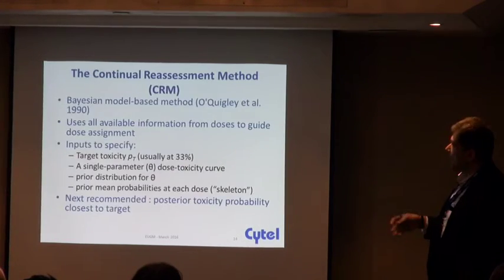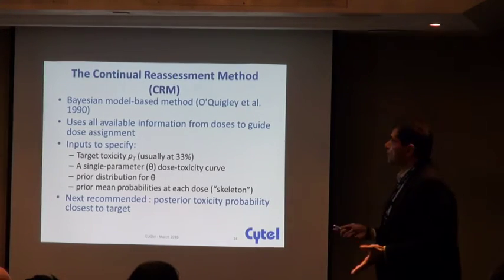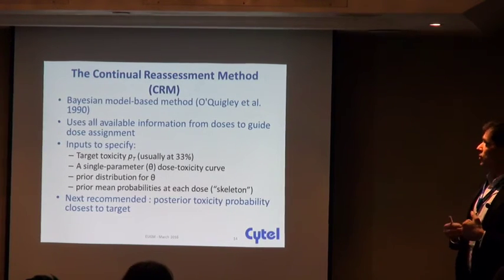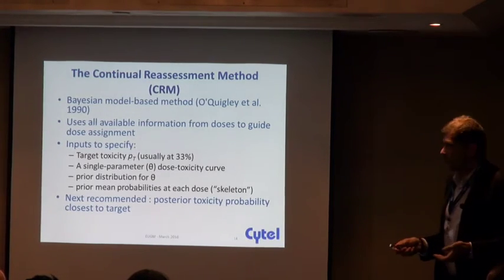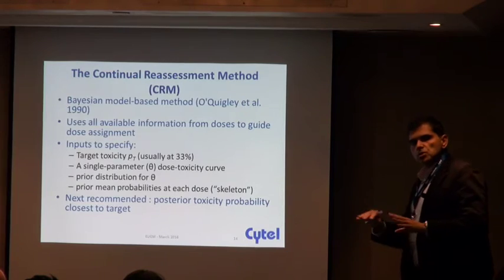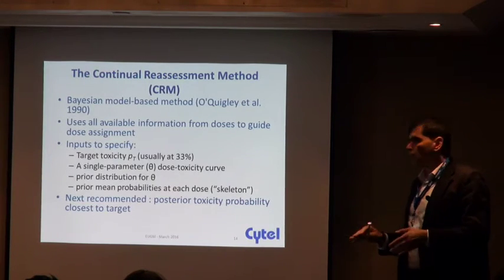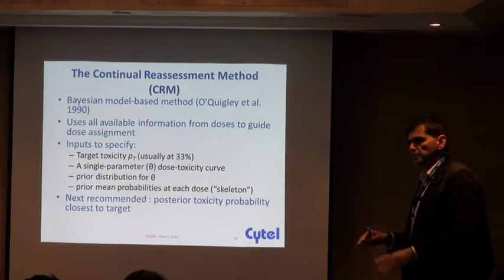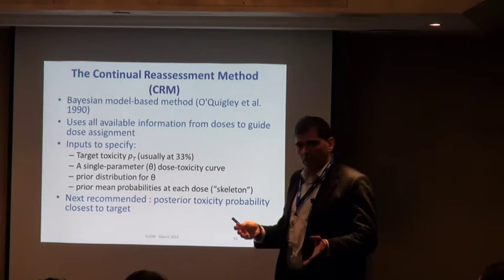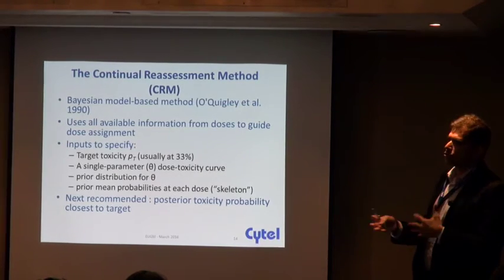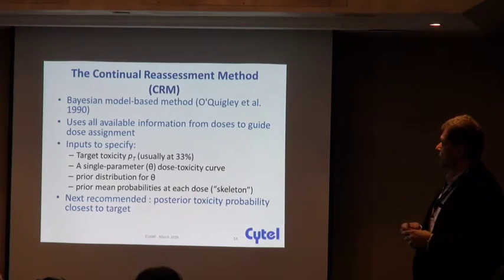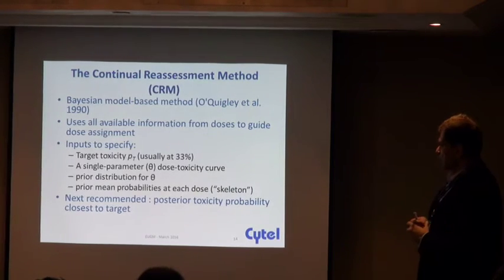The methods we have included in EAST utilize this approach. The first is the continual reassessment method, developed by Quigley et al., which uses all available information from doses to guide dose assignment. A user specifies the target toxicity level — typically 30% or 33% — and a function describing the dose-toxicity relationship, typically a single-parameter function. That parameter has a prior distribution; depending on whether it's a logistic, power function, or hyperbolic tangent, there are different priors such as log-normal or gamma distributions.